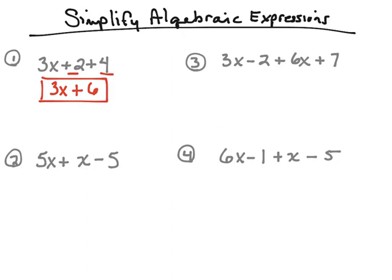Let's take a look at number two. The expression here is five x plus x minus five. We're going to combine the like terms. In this case, the like terms are five x and x — both have x's, so we can combine them. Five x's plus one more x gives a total of six x's. There's nothing to add with that negative five, so we bring it down. The simplified expression is six x minus five.